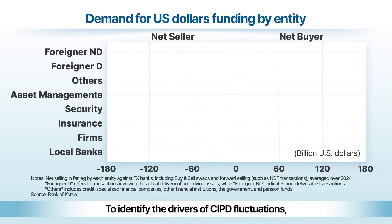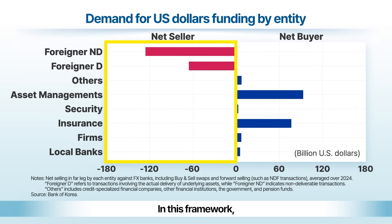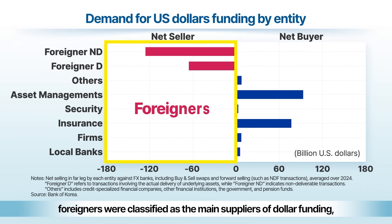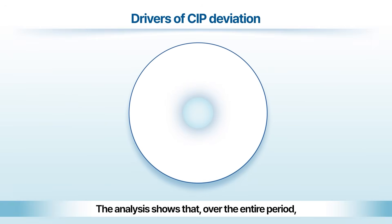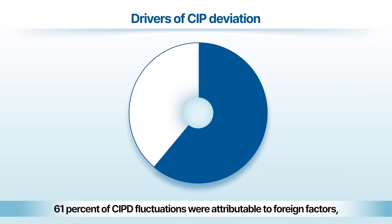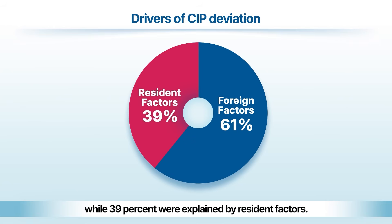To identify the drivers of CIPD fluctuations, panel data on dollar funding demand by sector was constructed. In this framework, foreigners were classified as the main suppliers of dollar funding, while residents were categorized primarily as demanders. The analysis shows that over the entire period, 61% of CIPD fluctuations were attributable to foreign factors, while 39% were explained by resident factors.